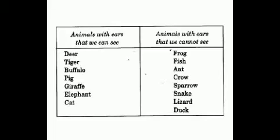Here is a list of animals with ears that we can see and with ears that we cannot see. A deer, a tiger, buffalo, pig, giraffe, elephant, cat — for all these animals, we can see the ears. And for frog, fish, ant, crow, sparrow, snake, lizard, duck — we cannot see the ears.